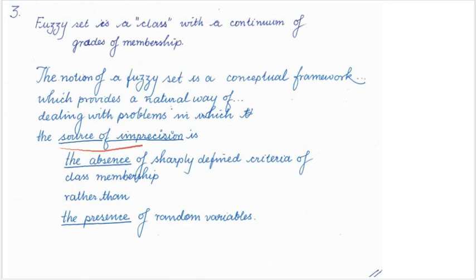So source of imprecision is there and what is the source of imprecision? Source of imprecision is the absence of this criteria which sharply defines the membership, rather than the presence of random variables. So here we are trying to clarify that the situation, the case which we are taking is not related to random variables. Imprecision is not due to random variables, rather imprecision is there because this criteria to sharply define the membership in a particular class, that criteria is absent here.